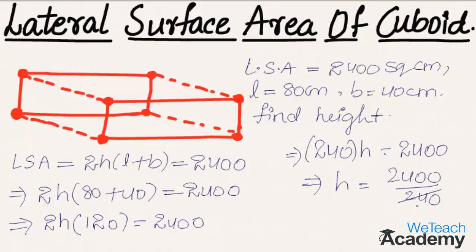Now simplifying this: 240 times 10 is 2400. So we get height equals 10 centimeters.